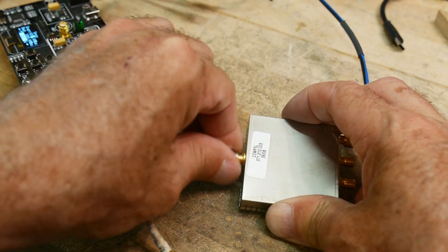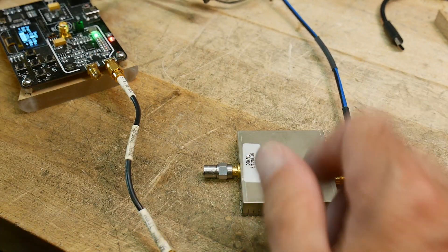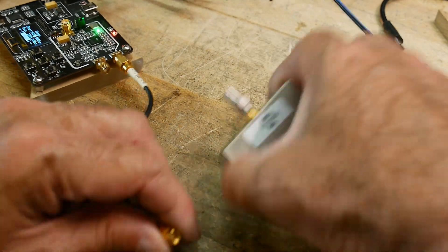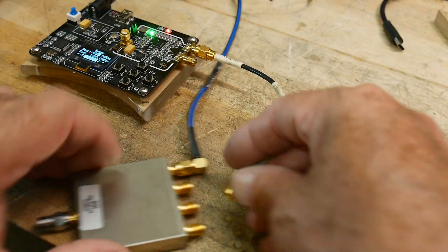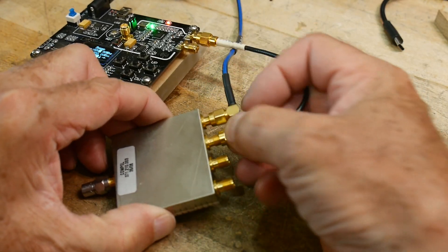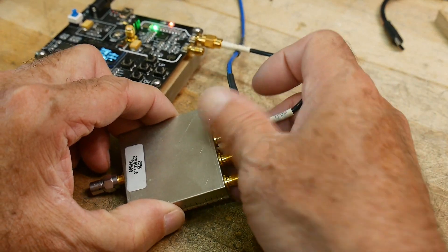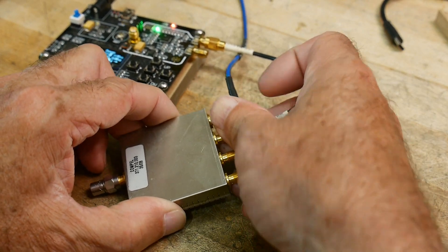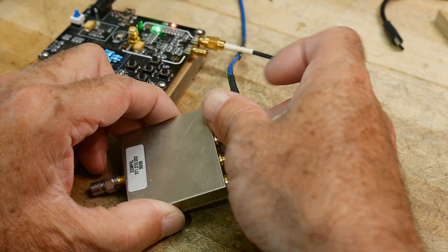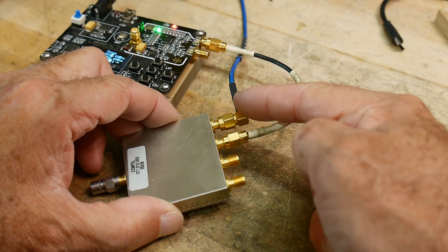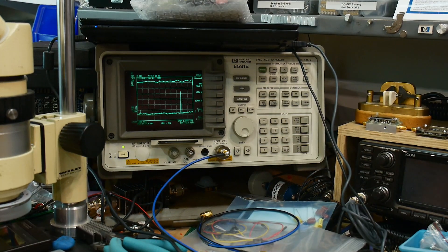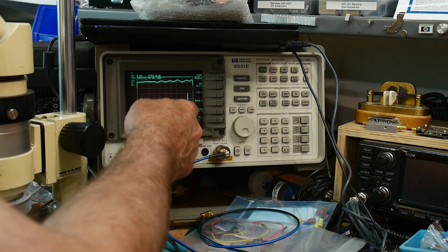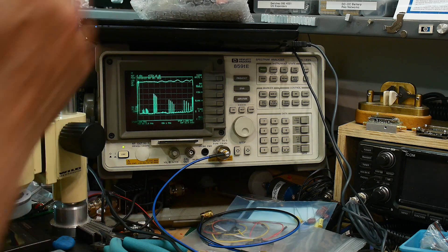So our input's got a 50 ohm load on it and we are going to inject the signal into one of these. So if there's any crosstalk we will see it between these two ports. All right, so let's see how we're doing over here. So now let's see, we can do max hold on this.